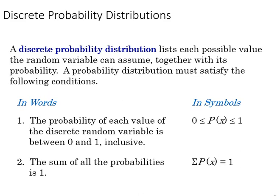If we go to discrete probability distributions, these apply to discrete variables. As we see here, they have two conditions or two properties. The probability of each value is between zero and one, and the sum of all probability is one. These are the symbols that represent those statements.